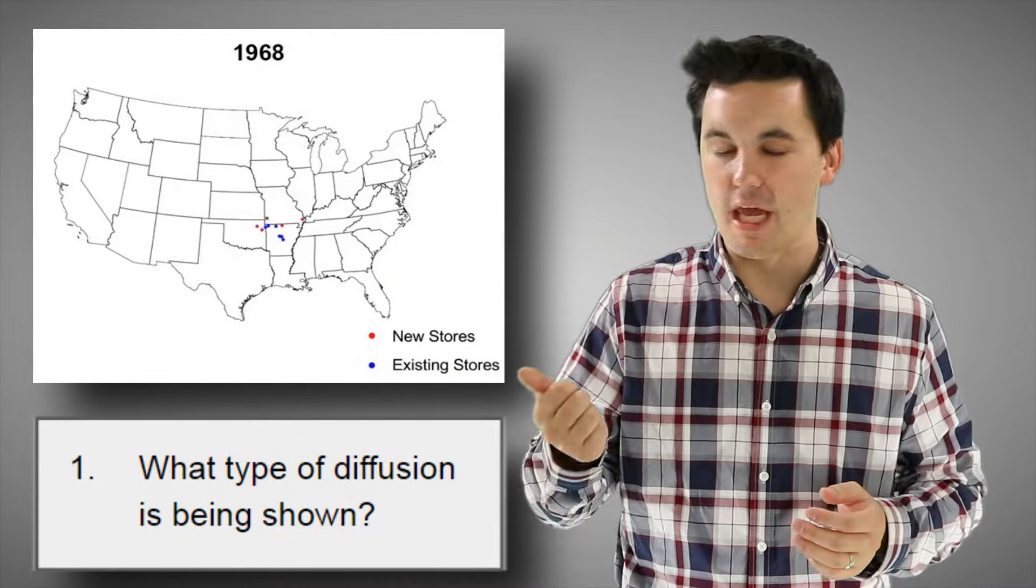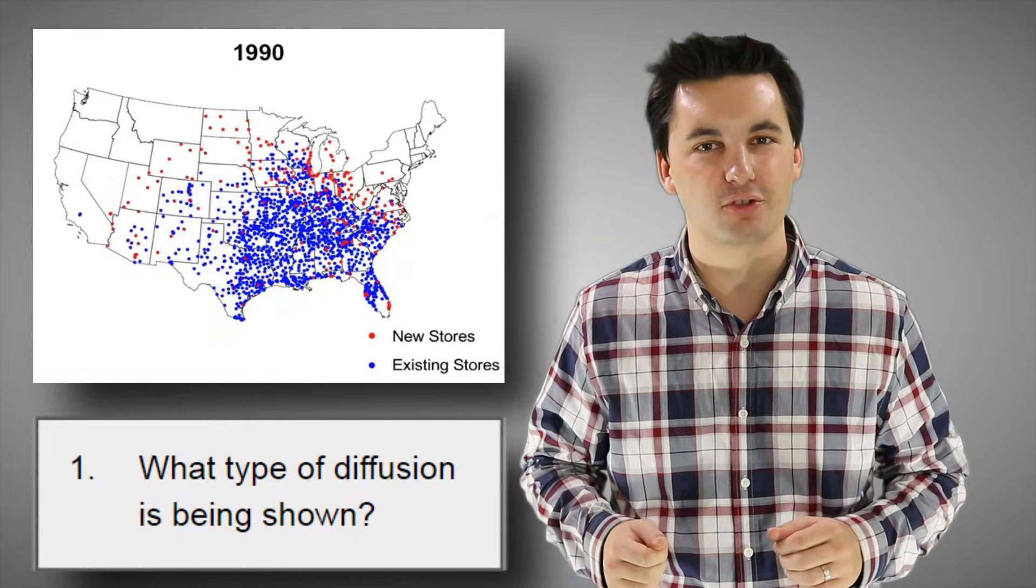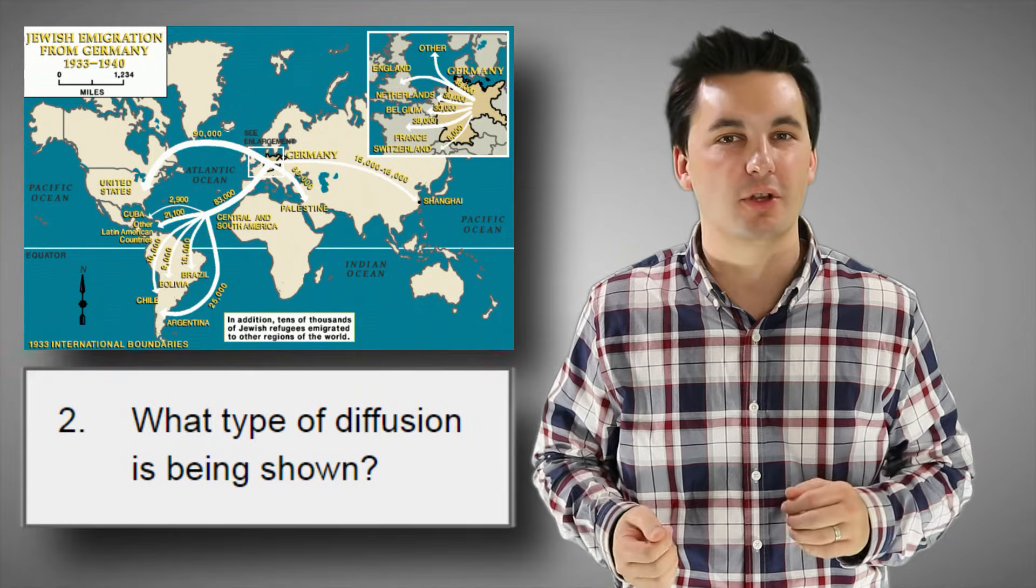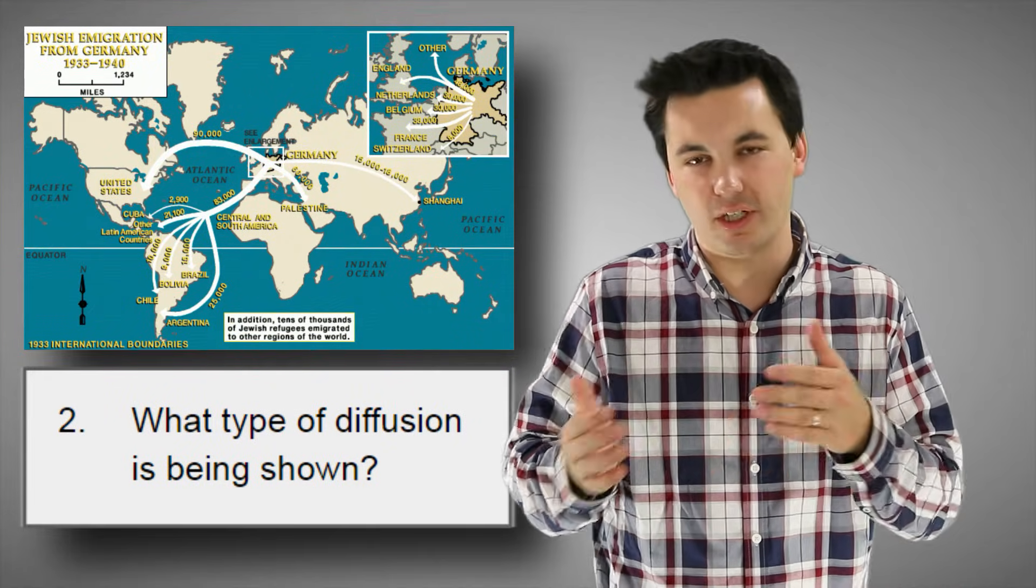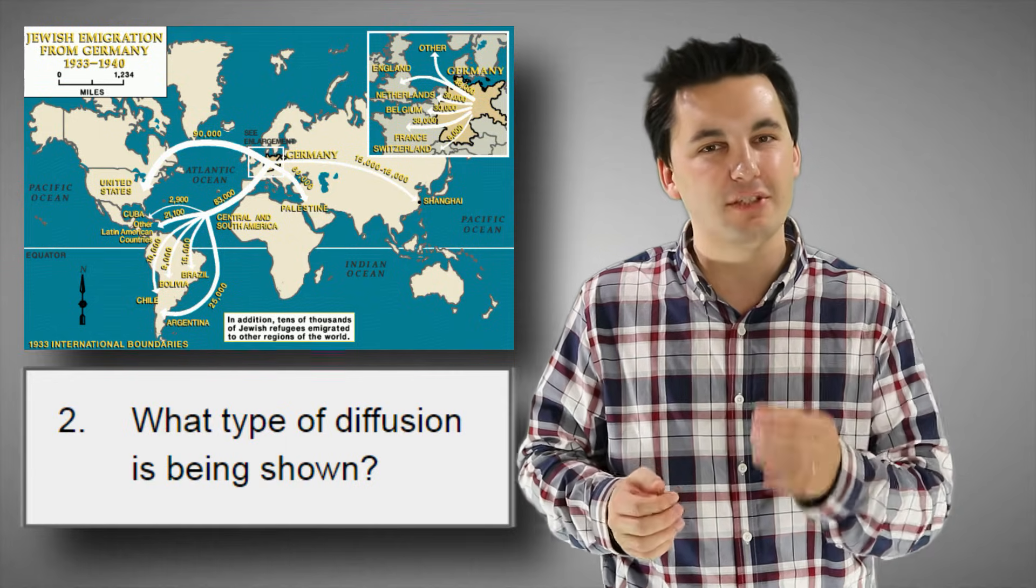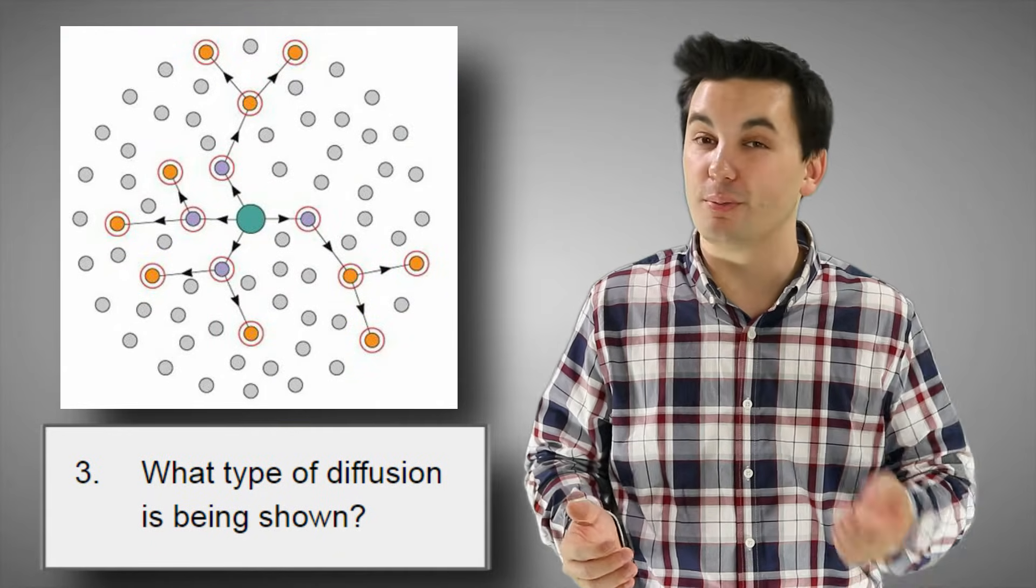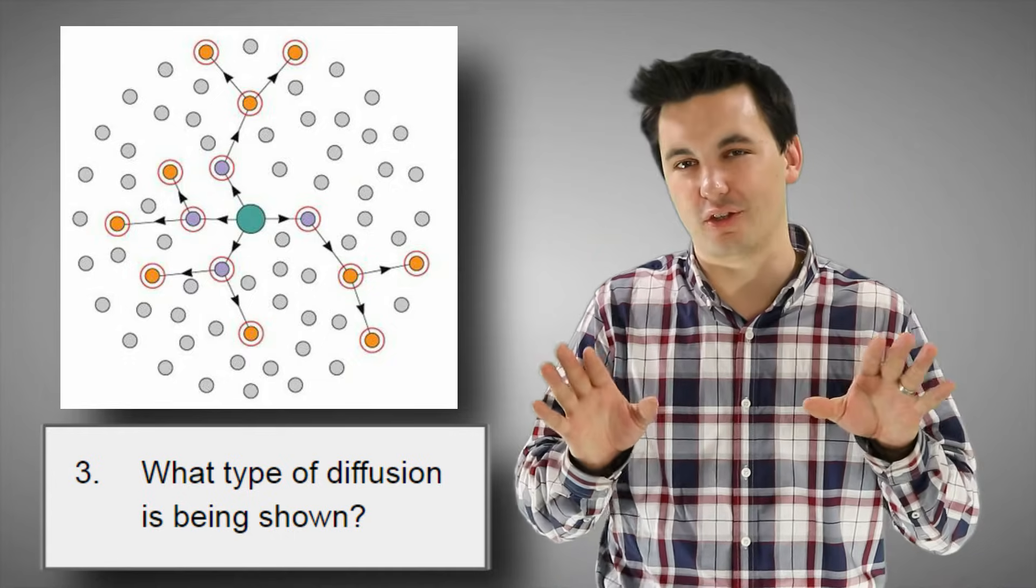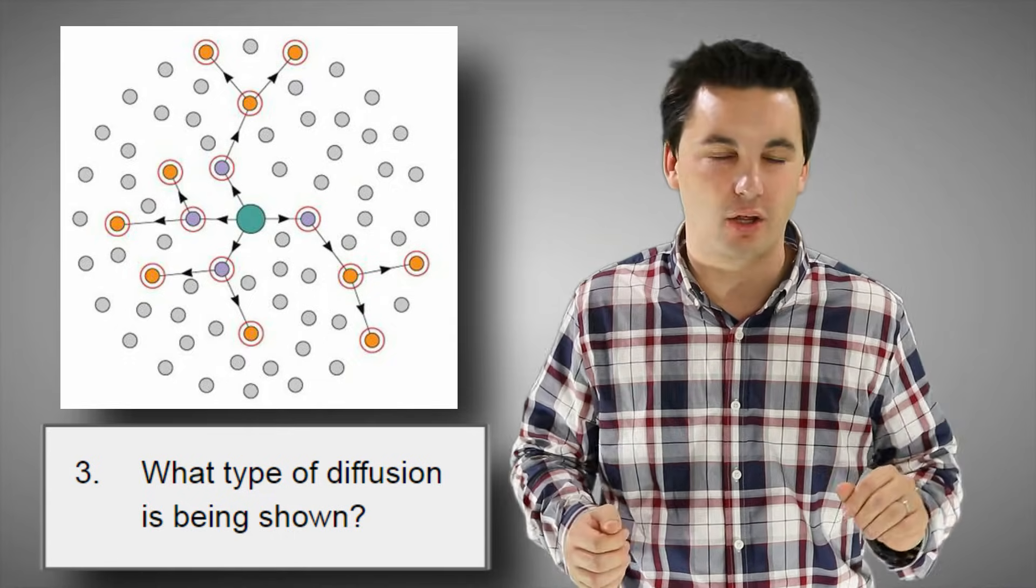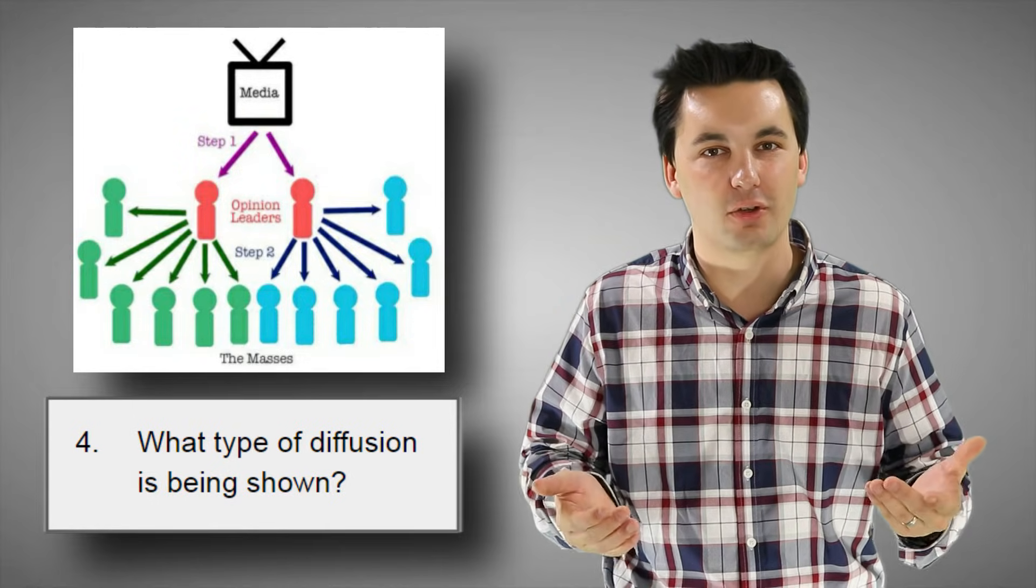Today we reviewed relocation diffusion, expansion diffusion, the different types of expansion diffusion, and also barriers to diffusion. Now, you know the drill. It's time for us to practice what we just learned. You can see different questions and examples on the screen right now. What I want you to do is answer those questions. Try to identify the different types of diffusion. Also, if you want to help with some diffusion, possibly contagious diffusion, making this video go viral, please consider sharing the video or subscribing to the channel. It's a great way to support the channel and it allows me to make more videos in the future.